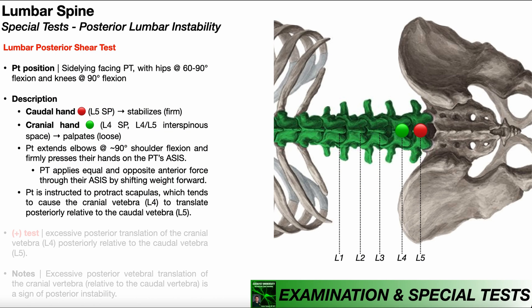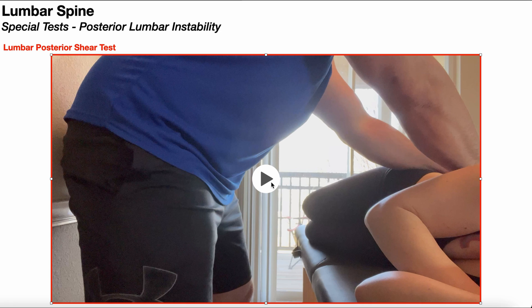Once the PT is stabilizing and palpating the correct vertebrae, they then instruct the patient to extend their elbows at about 90 degrees of shoulder flexion and firmly press their hands onto the PT's ASIS. Looking at this from the side: my left hand is firmly stabilizing L5, preventing its movement, and my right hand is loosely palpating L4, trying to detect any excessive movement of L4 relative to L5.